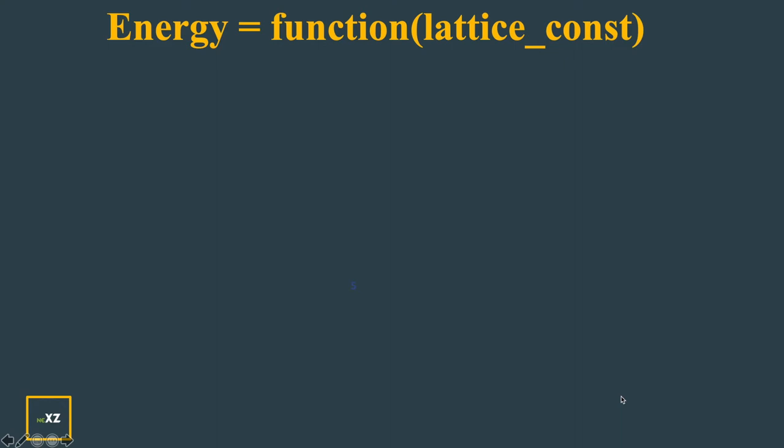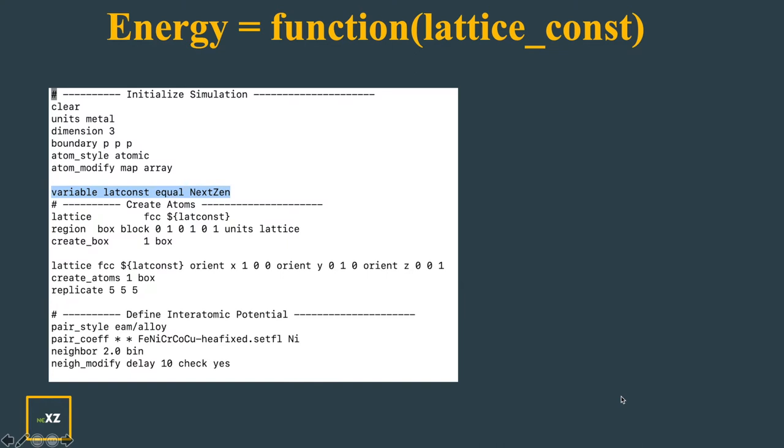Now we will discuss how to get the energy from LAMMPS as a function of lattice constant. If you take this structure of the LAMMPS script, we see initialization of the simulation using the units, dimension and boundary conditions and then I define a variable of lattice constant with nextzen and I replace it with a number. I will do that in bash script using sed.